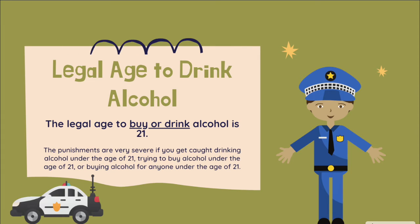The legal age to drink or purchase alcoholic beverages is 21, and the punishments are very severe if you get caught drinking under the age of 21, trying to buy alcohol under 21, or buying alcohol for somebody else who's underage. If someone who's 21 or older buys alcohol for you, that's illegal. If a person offers you a drink and you take a sip, that's illegal because you are under 21, and the person offering is also doing something illegal. The fines and punishments are very severe.